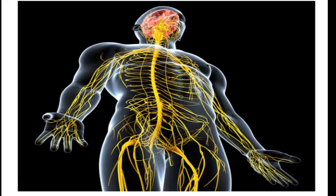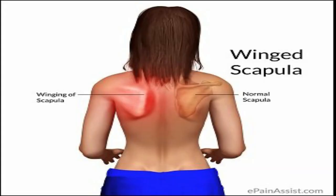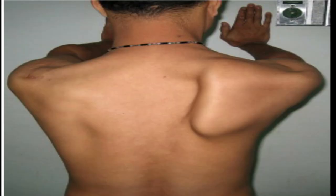The first one we're going to start with is the winged scapula. A winged scapula is a skeletal muscle condition in which the shoulder blade protrudes from the person's back — an abnormal position. You get a winged scapula if you have the long thoracic nerve of Bell damaged, which supplies the serratus anterior muscle.